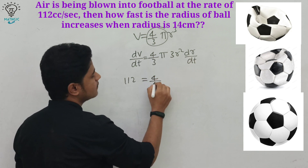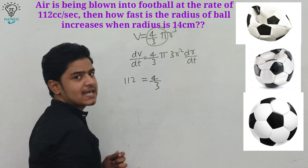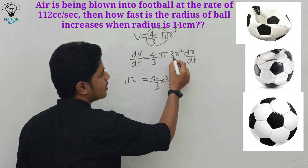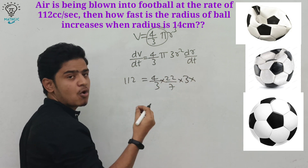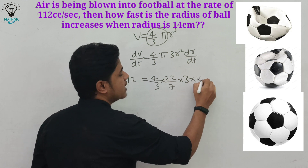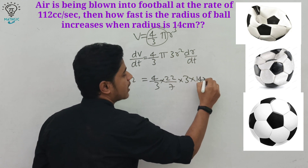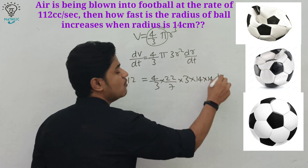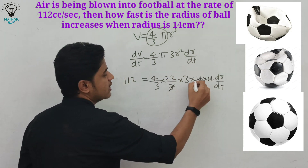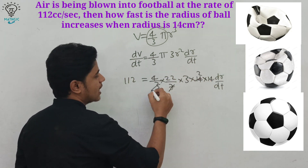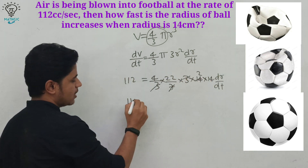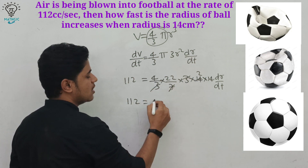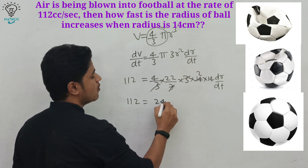Substituting the values: (4/3) × (22/7) × 3r² × dr/dt = 112. The radius is fixed at 14 cm, so r² = 14² = 196. The 3s cancel, giving 4 × 22 × 2 × 14 × dr/dt = 112. That gives 2464 × dr/dt = 112.